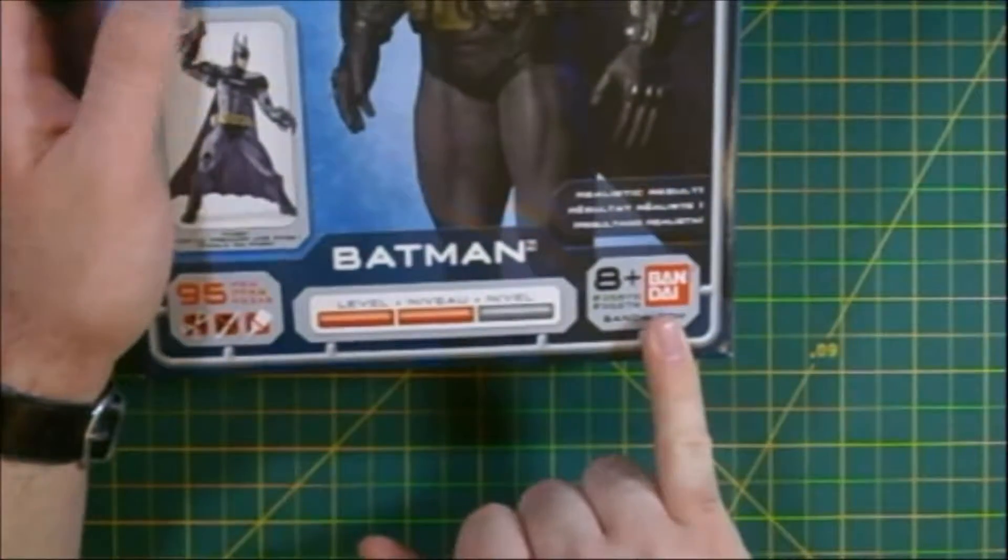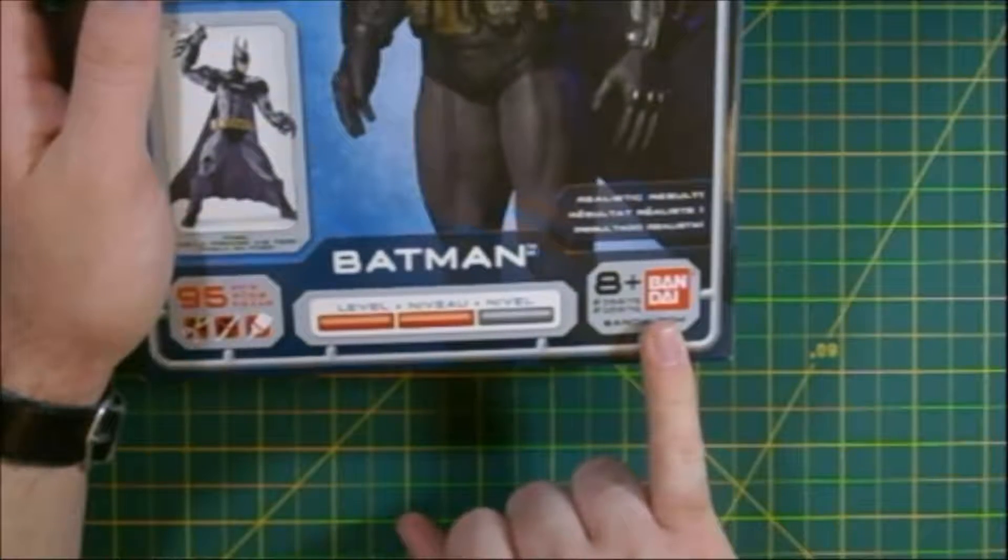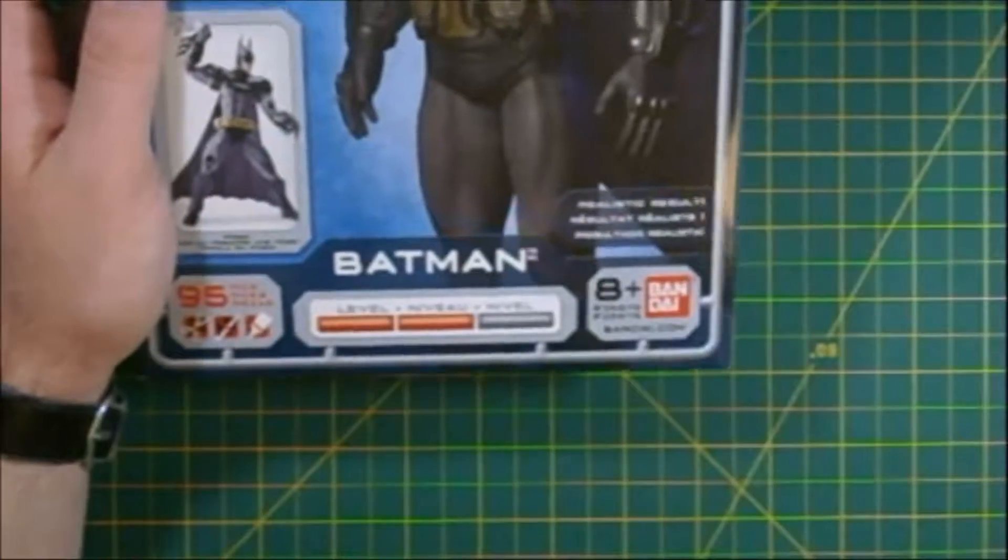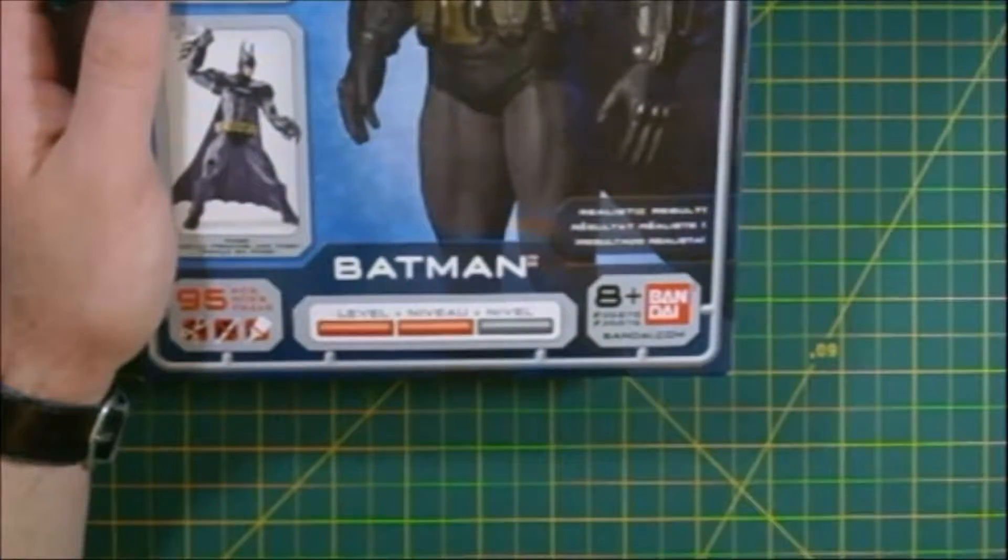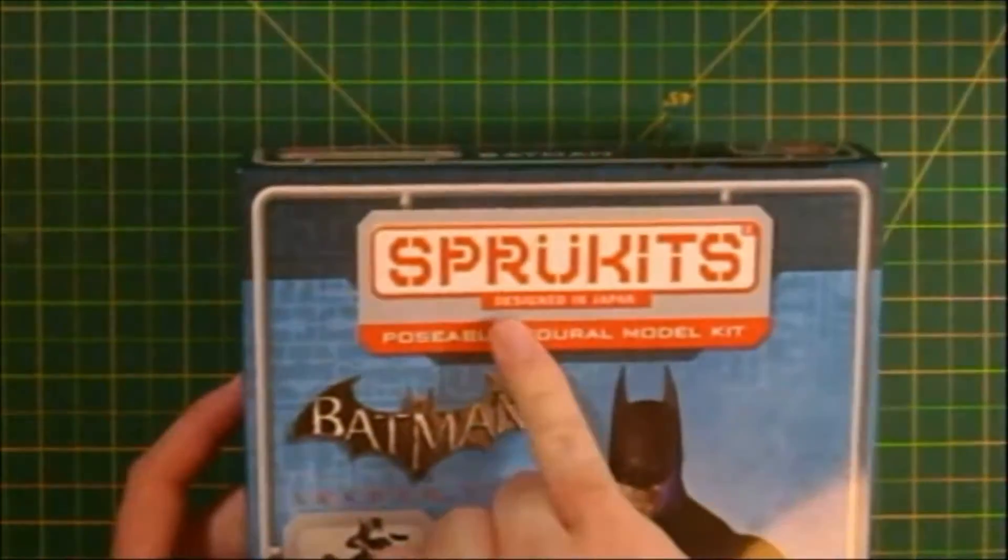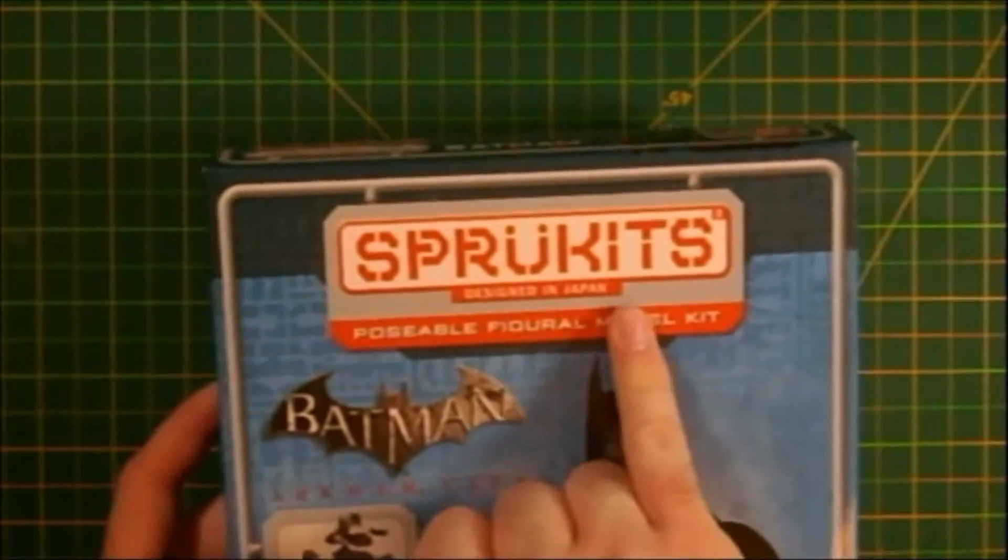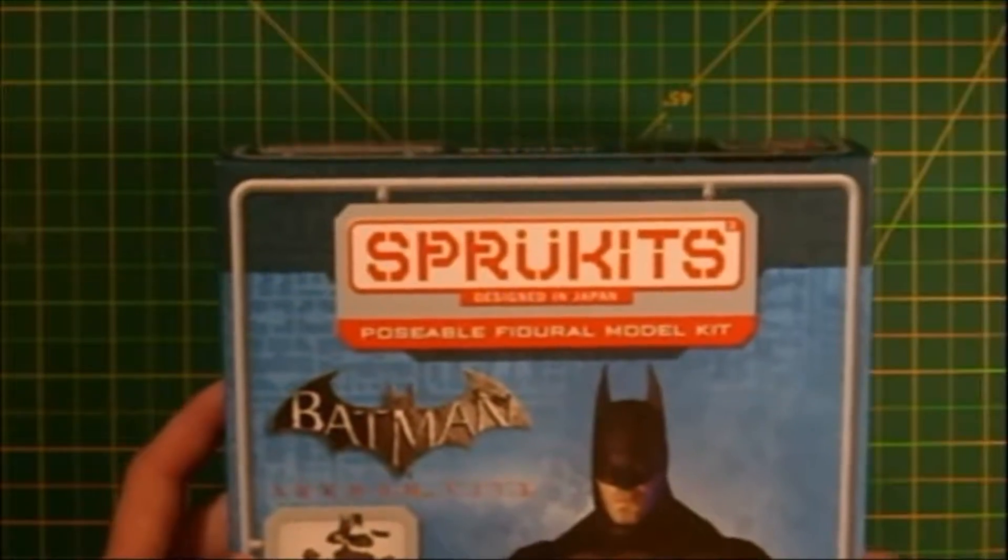We've got this little bit right here indicating the difficulty level of this particular Sprue Kit, which is probably about equivalent to a high-grade Gundam kit. And again, we see the Bandai logo. These are designed by the same people, by the same company that designs the Gundam kits.